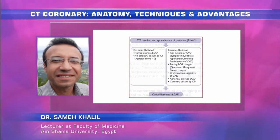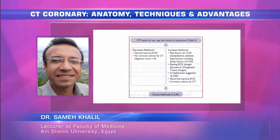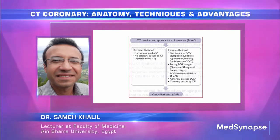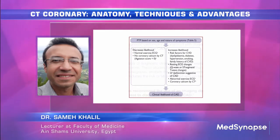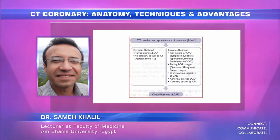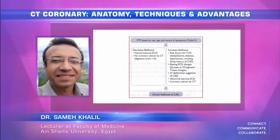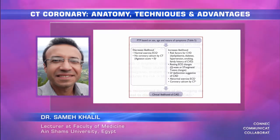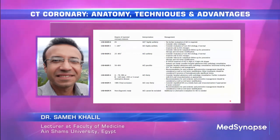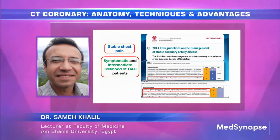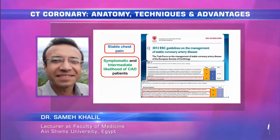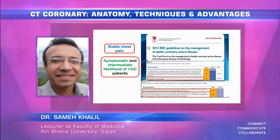We assess likelihood by evaluating risk factors such as hypertension, hyperlipidemia, diabetes, smoking, and age, categorizing the patient into high likelihood or low-to-intermediate likelihood. This establishes a clear role for CT coronary in acute chest pain conditions.